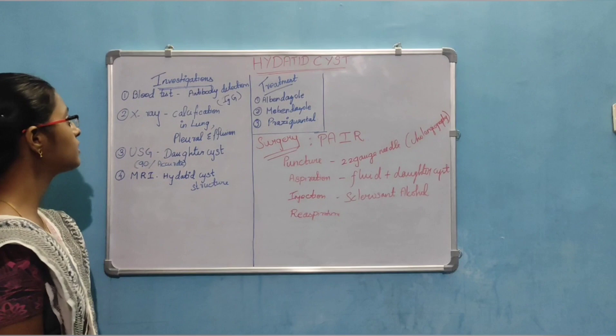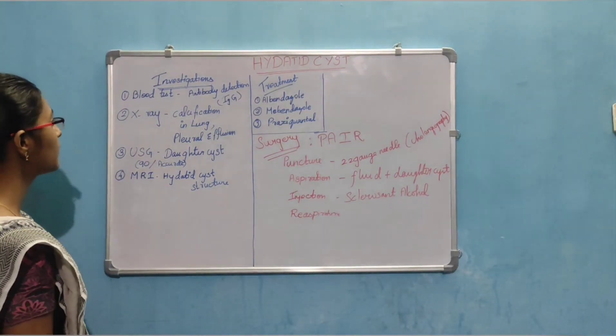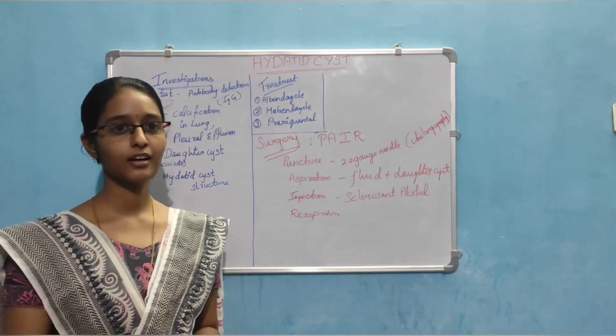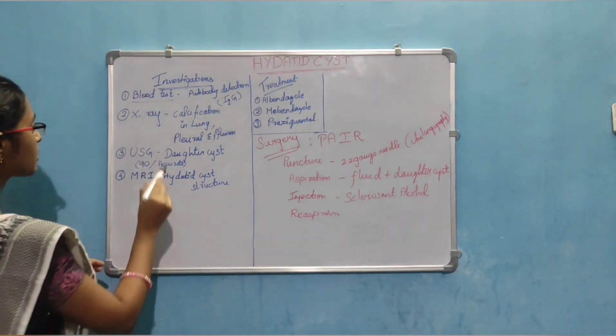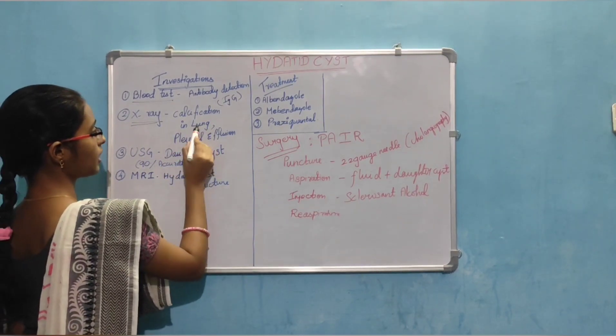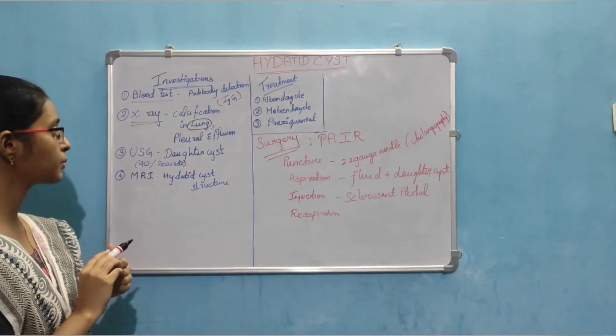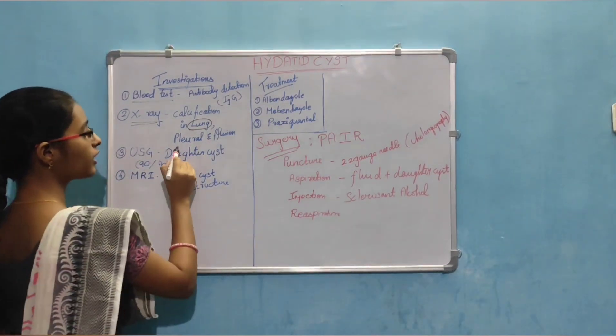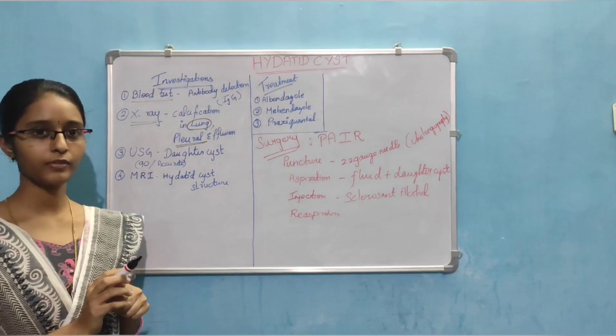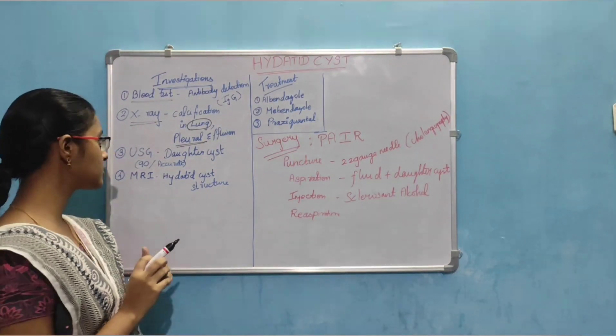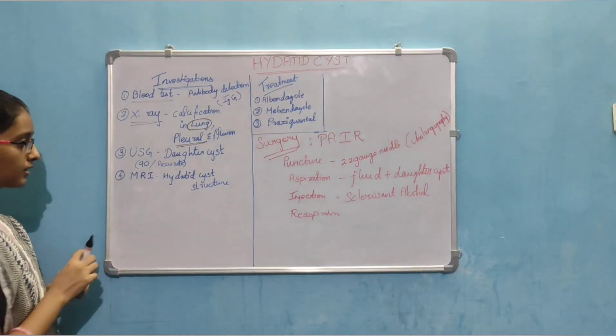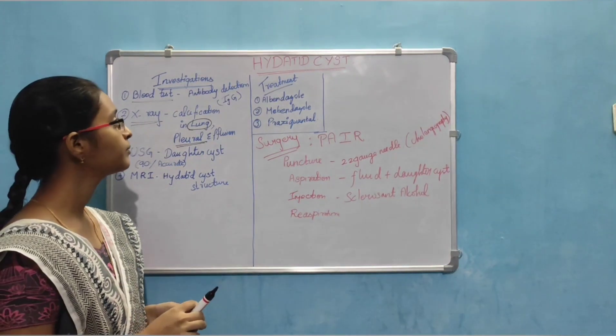Investigation of hydatid cyst: Blood test is done for antibody detection, IgG. Chest x-ray is done for calcification in lung or about pleural effusion identified. Ultrasonography is 90% accuracy and it shows presence of daughter cyst. MRI shows the structure of the hydatid cyst.